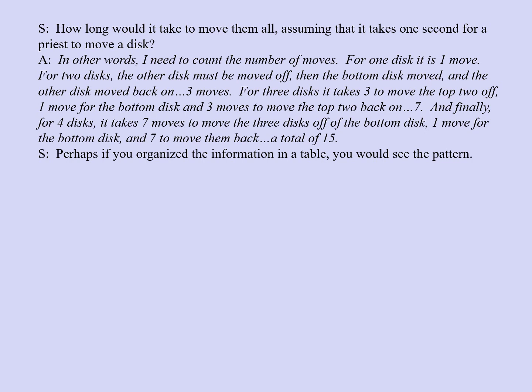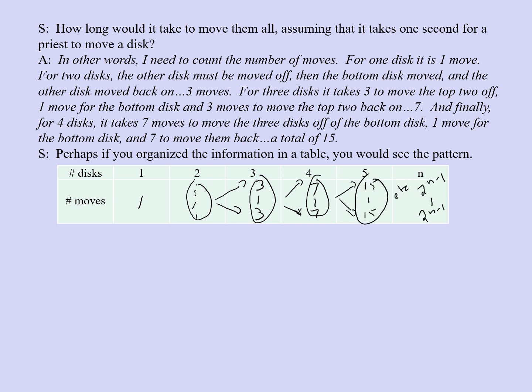Perhaps if you organize the information in a table, you would see a pattern. So, do so. And notice, 2 to the power of n minus 1 plus 1 plus 2 to the power of n minus 1 simplifies to 2 to the nth power minus 1. You may want to check that. In other words, 2 to the n minus 1 for n discs. So, for 100 discs, it would take more than 2 to the hundredth minus 1 seconds. Cool!